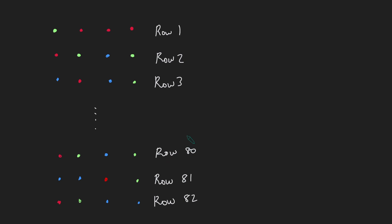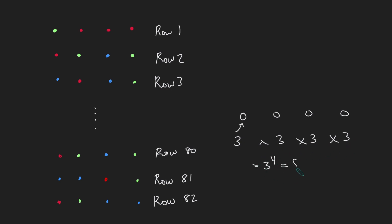I deliberately chose 82 rows because 82 is one more than 81, and 81 is 3 to the power of 4. Each row has four dots, and for each dot there are three colour choices — red, blue, or green. So the total number of different row colourings is 3 × 3 × 3 × 3 = 3^4 = 81.